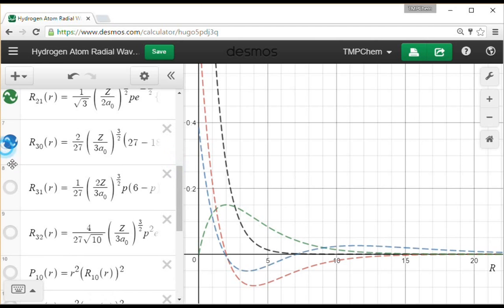For R30, that is a 3s function in blue here. It has two radial nodes, crosses 0 twice, decaying away even more slowly. It has a higher energy, it has a closer energy to 0. It's further away from our proton and doesn't feel it as strongly.